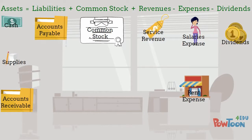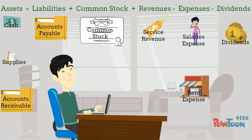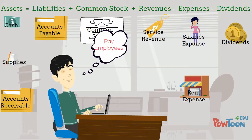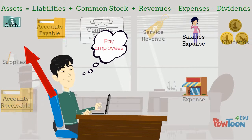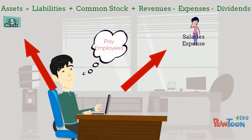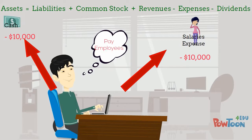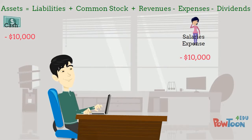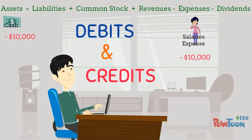As a transaction or business event occurs, accounts need to record that information into the accounts found in the equation. Some transactions will cause an account balance to increase, while others will cause the balance of the account to decrease. These increases and decreases are recorded as debits and credits in accounting.